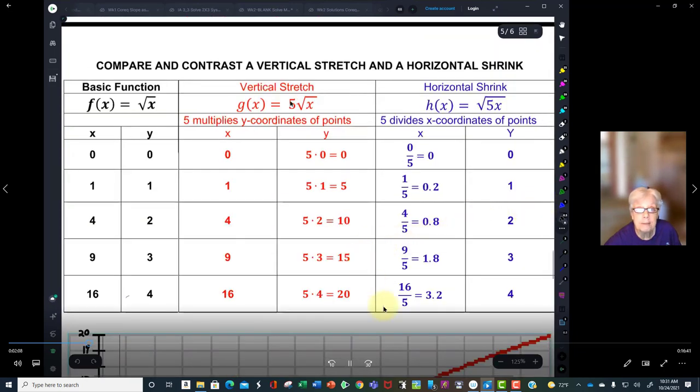The red graph is a vertical stretch. Let's look at that one first. This 5 will multiply all of the y-coordinates. So when we have 0, 0, you multiply 5 by 0, you still get 0. However, 1, 1 becomes 1, 5, and 4, 2 becomes 4, 10. 9, 3 becomes 9, 15, and 16, 4 becomes 16, 20. Let's look at those.